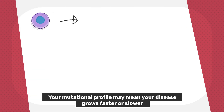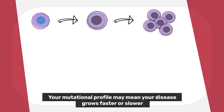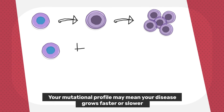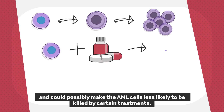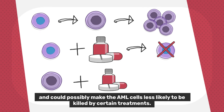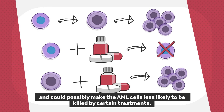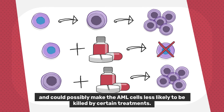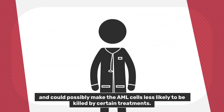Your mutational profile may mean your disease grows faster or slower, and could possibly make the AML cells less likely to be killed by certain treatments.